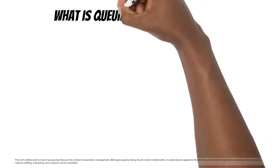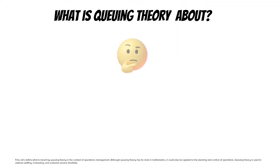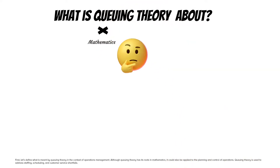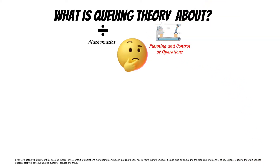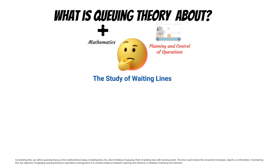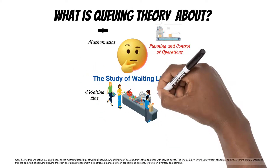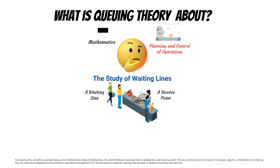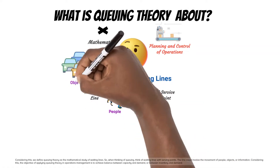First, let's define what is meant by queuing theory in the context of operations management. Although queuing theory has its roots in mathematics, it could also be applied to the planning and control of operations. Queuing theory is used to address staffing, scheduling, and customer service shortfalls. Considering this, we define queuing theory as the mathematical study of waiting lines. When thinking of queuing, think of waiting lines with serving points. The line could involve the movement of people, objects, or information.